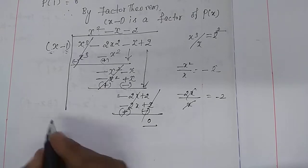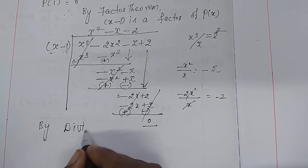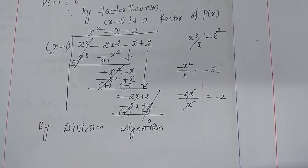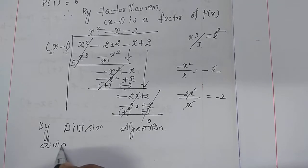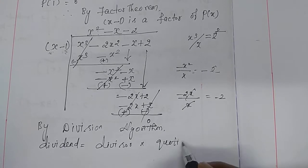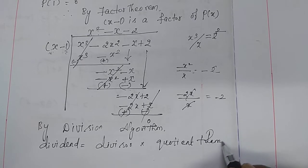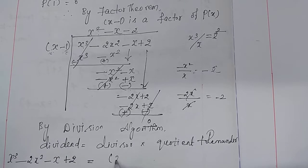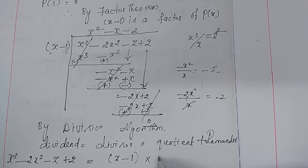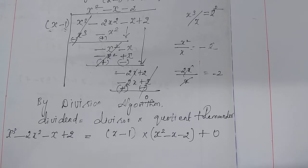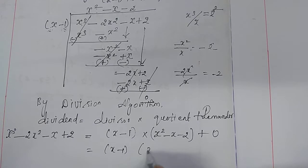The remainder is 0. Therefore, by the division algorithm, we can write: dividend equals divisor into quotient plus remainder. Our dividend is x cube minus 2x square minus x plus 2. Our divisor is x minus 1, quotient is x square minus x minus 2, and the remainder is 0. So this equals x minus 1 into x square minus x minus 2.